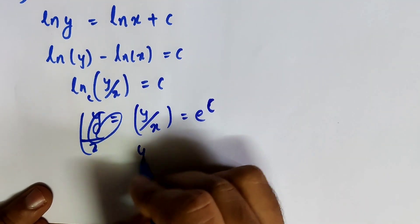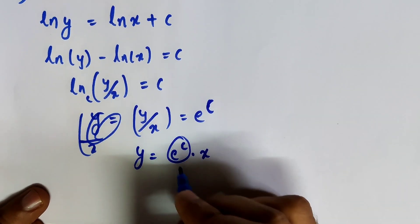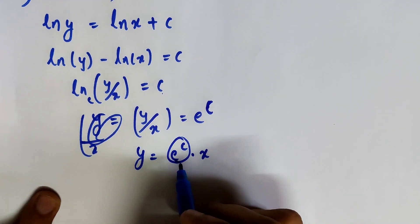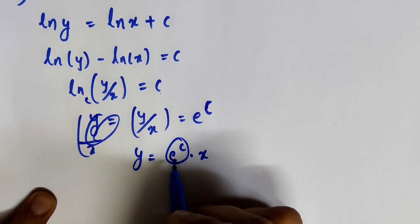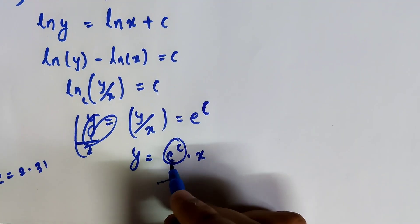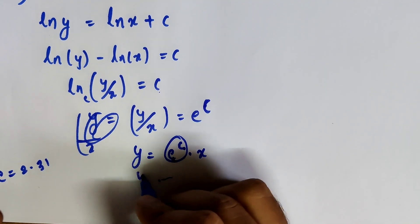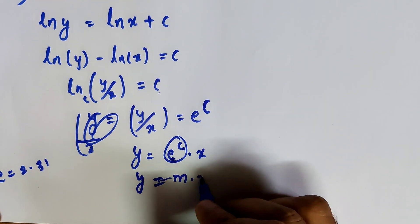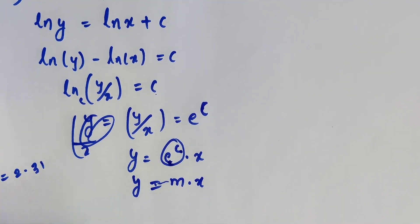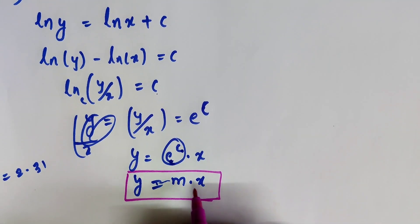From log(y/x) equals c, we get y/x equals e^c. Therefore y equals e^c times x. Since e^c is already a constant — e is approximately 2.718, so e^c is some constant value — we can write y equals m times x, where m is a constant. This is the solution of the differential equation dy/dx equals y/x.